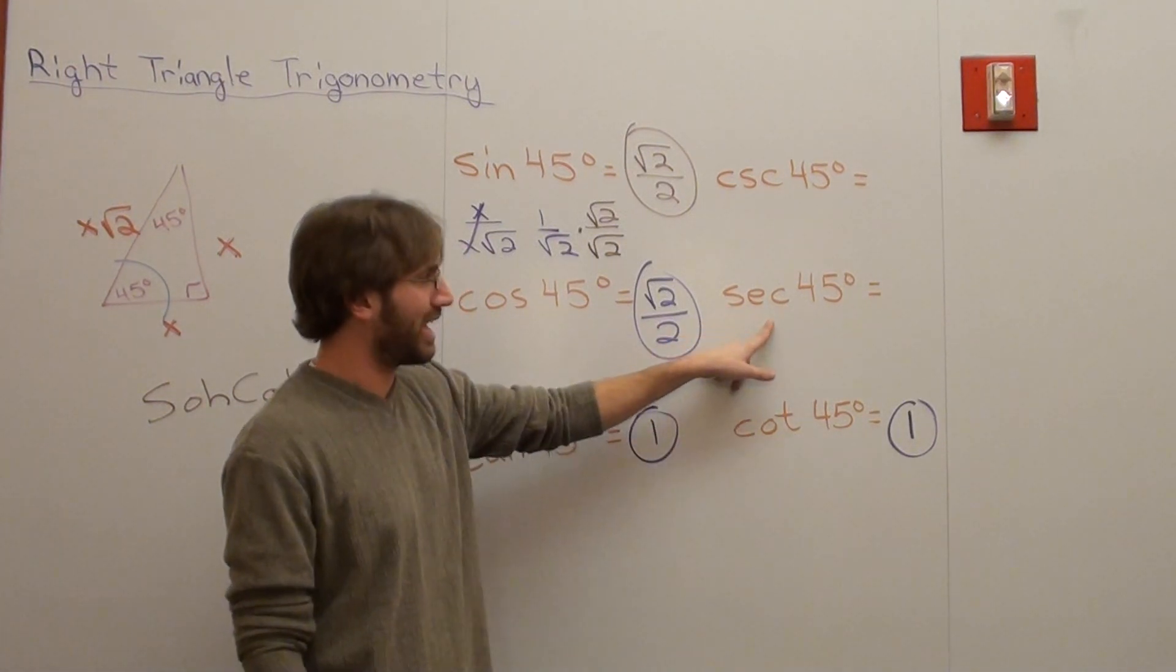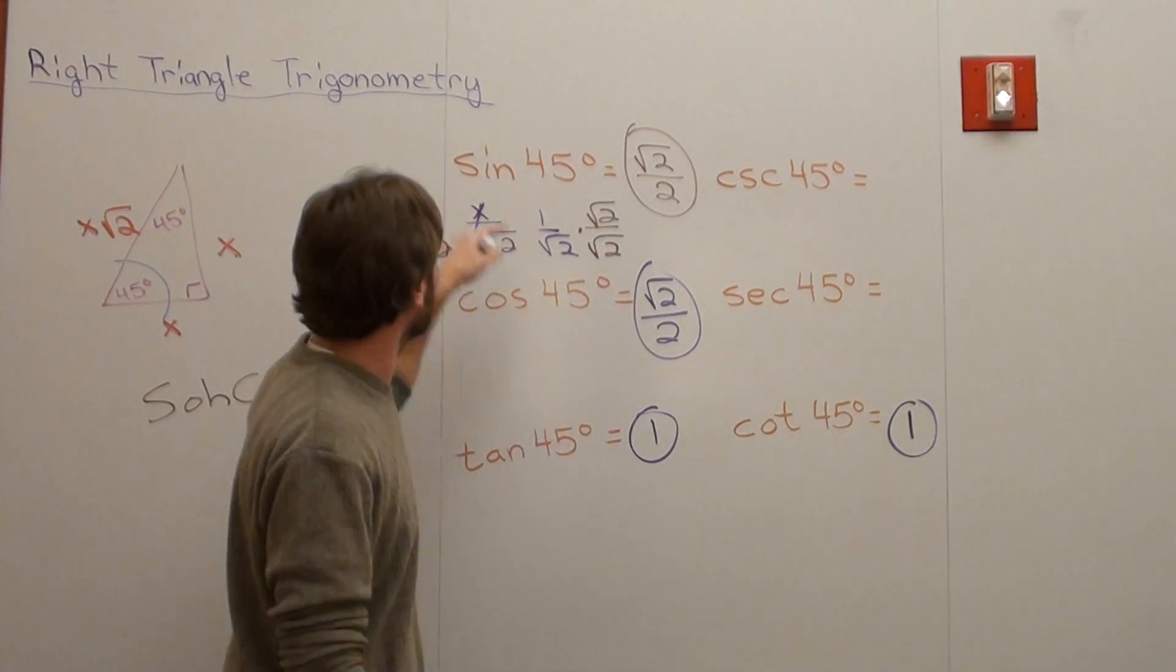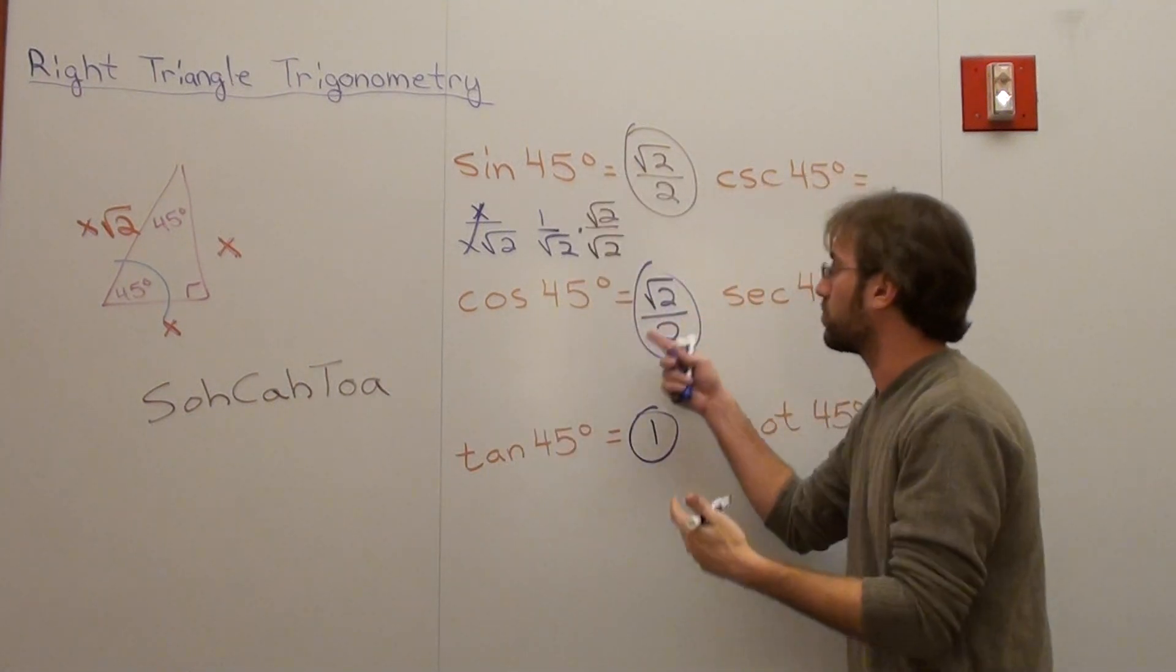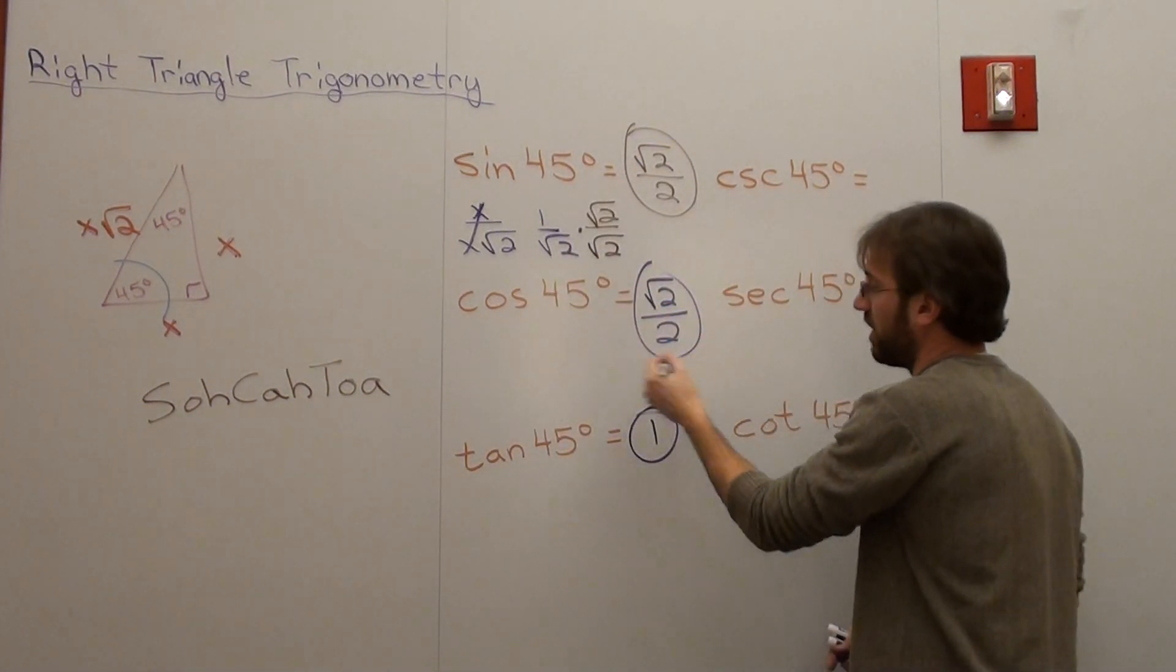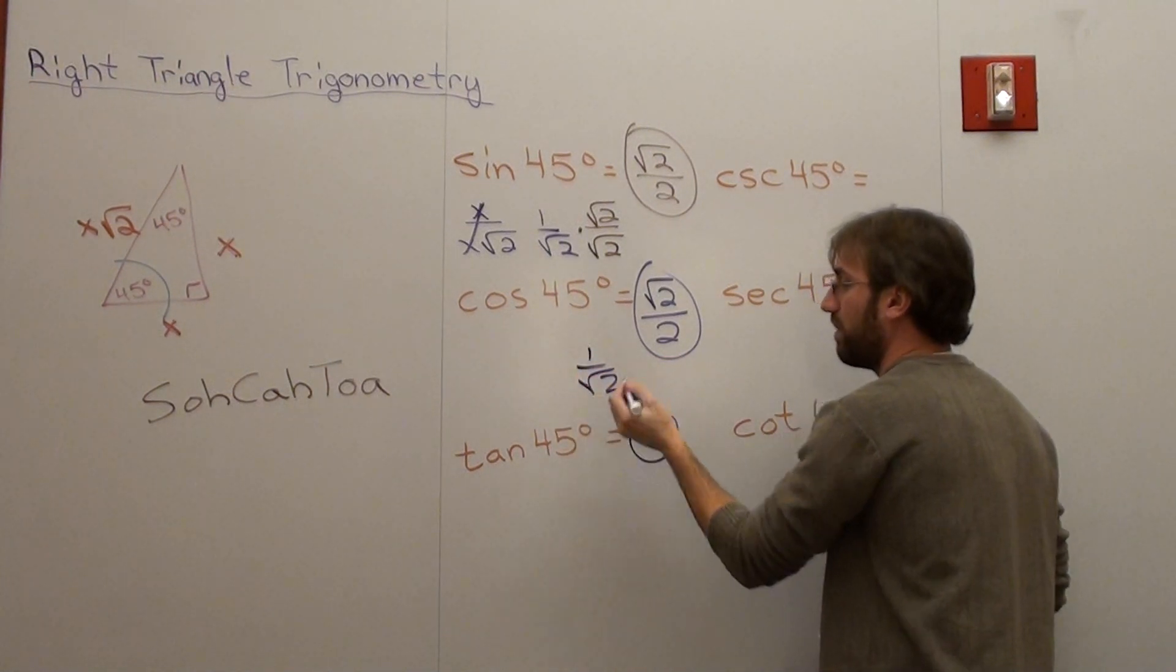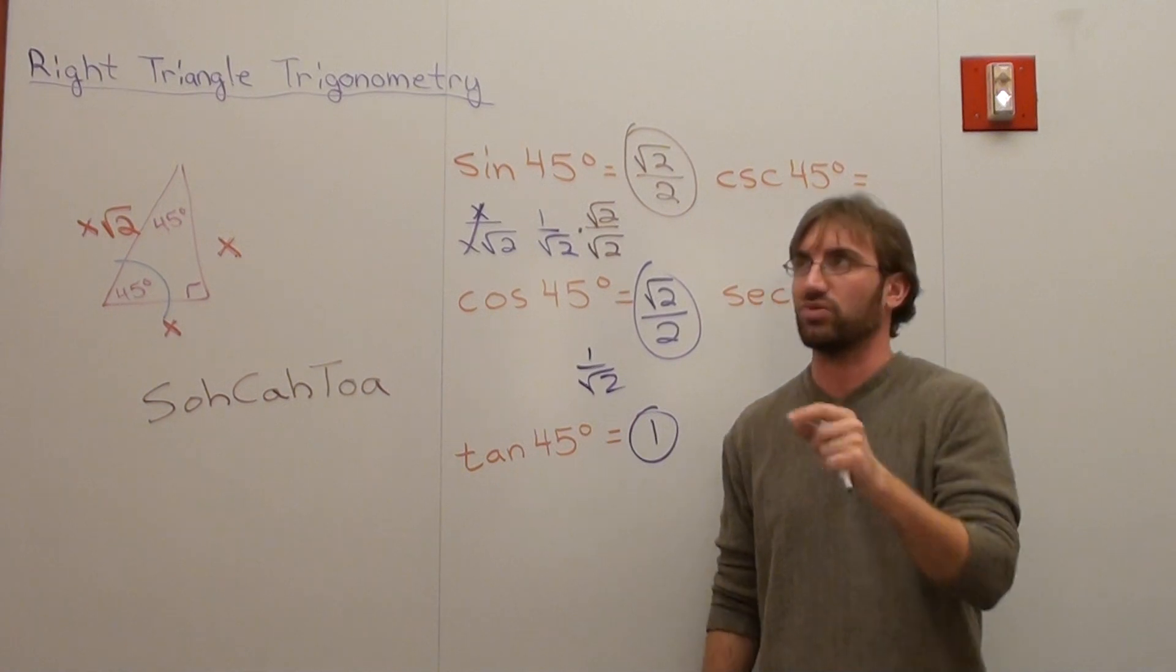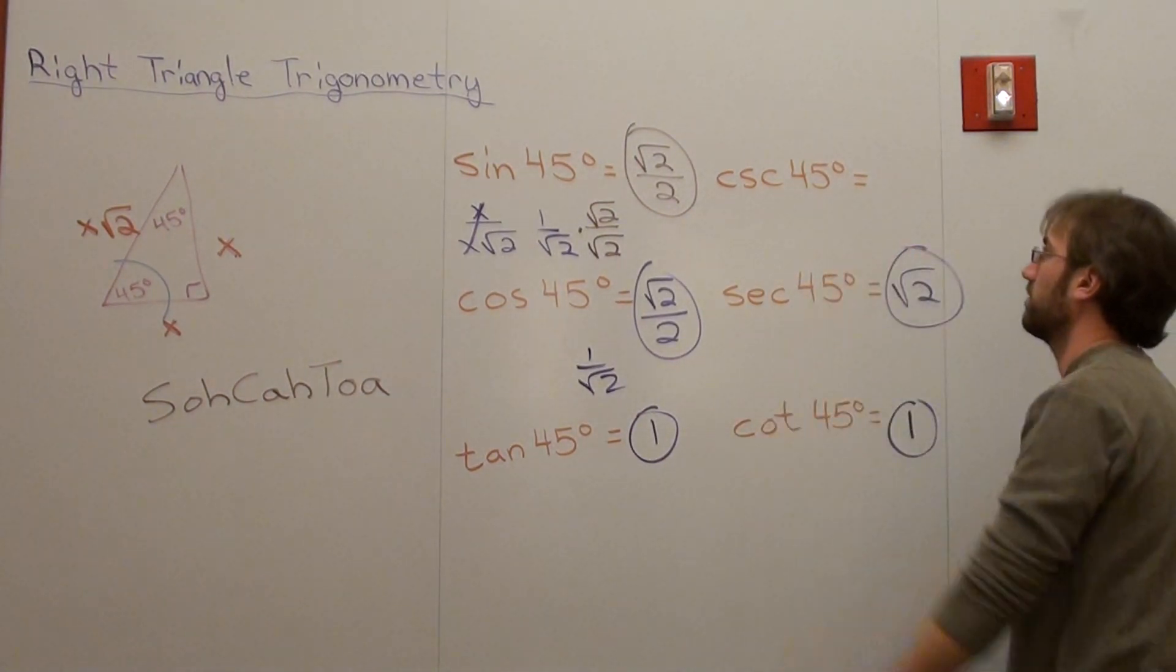Let's do the secant of 45 degrees. The secant of 45 degrees is the reciprocal of the cosine of 45 degrees. When I did that, it was 1 over root 2. That was cosine of 45 degrees is 1 over root 2 before I do my magic. Before you even do anything, just flip 1 over root 2. It's root 2 over 1. There you go. Done. Finito.